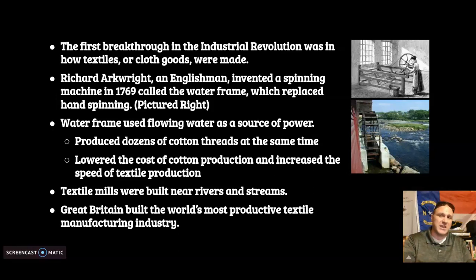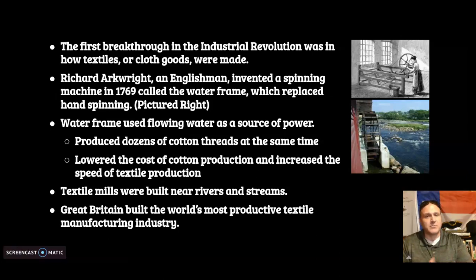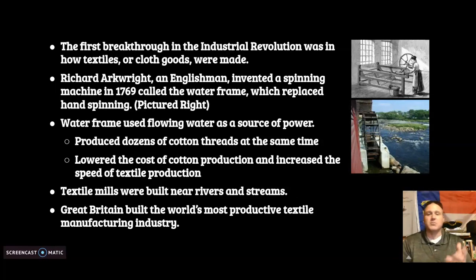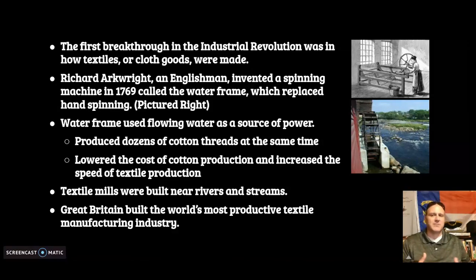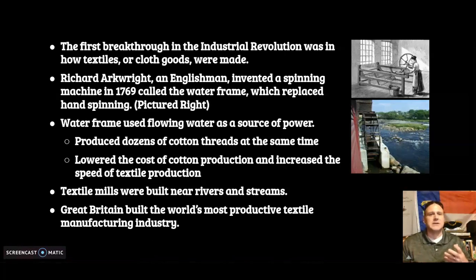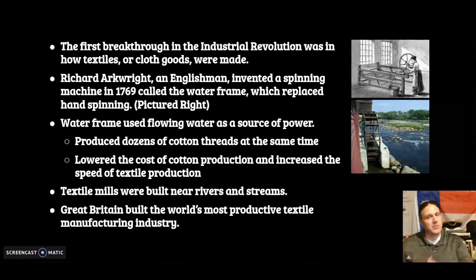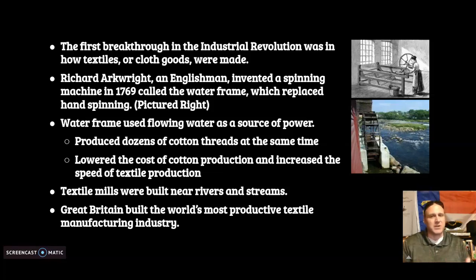What does this do for textile goods? It makes cotton production faster and more efficient, which leads to a cheaper price of goods. Many textile mills were built by rivers and streams. By the late 1760s, Great Britain was becoming the most productive textile manufacturing industry in the world, and they actually started using American cotton.